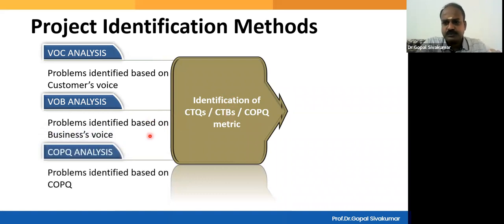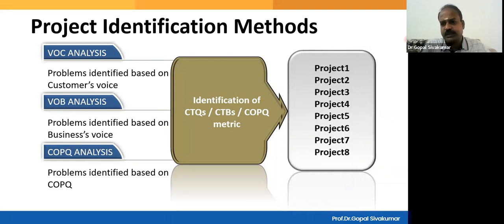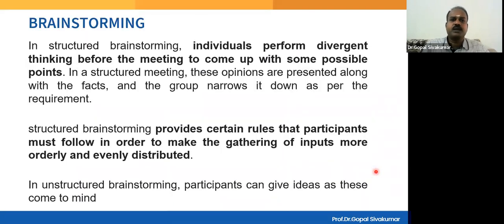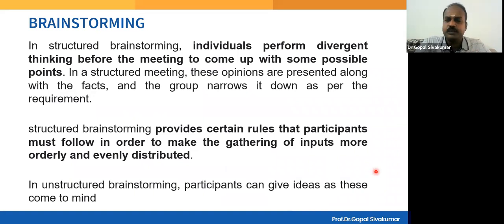Above all, the accounted failures — called Cost of Poor Quality — include both internal and external failures. You can identify problems based on Cost of Poor Quality data. You convert all of them into measurable metrics and try to improve those metrics. The resulting list of projects is what we call the Project Hopper. You can use Voice of Customer, Voice of Business, or Cost of Poor Quality to create the Project Hopper.